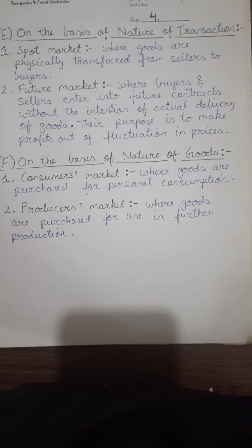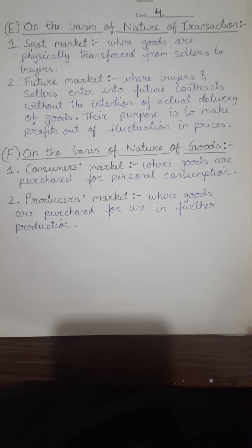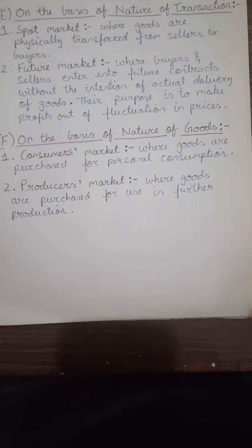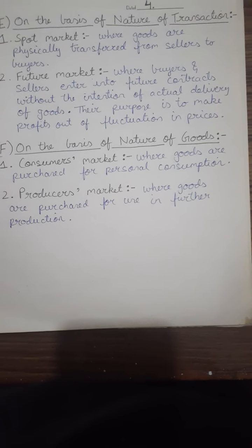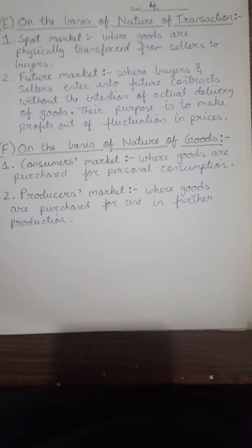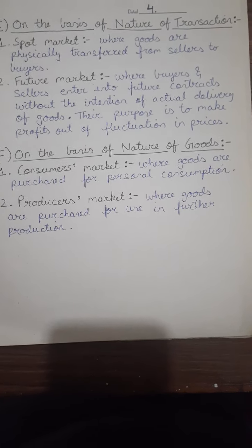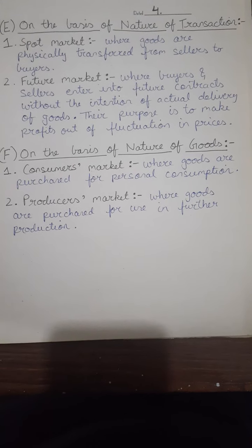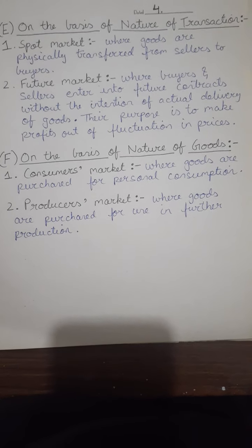Next, on the basis of nature of transaction: spot market and future market. Spot market is a place or market where goods are transferred physically from sellers to buyers on the spot. Whereas in future market, buyers and sellers enter into a future contract, meaning delivery does not take place then and there — goods are delivered in future. The basic purpose is to make profits out of fluctuation in prices.